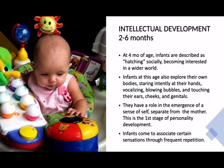At four months, infants are described as hatching socially as they become more interested in a wider world. They explore their own bodies, staring intently at their hands, vocalizing, doing bubbles, and touching their ears, cheeks, and genitals. This is the period where the infant explores their body, which is why mittens that cover the hands are discouraged — covering the hands prevents this important exploration. These explorations have a role in the emergence of a sense of self, separate from the mother, and represent the first stage of personality development.